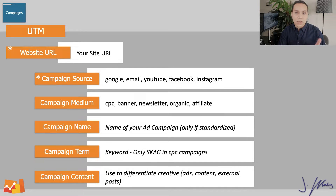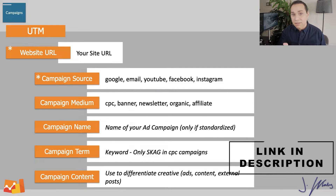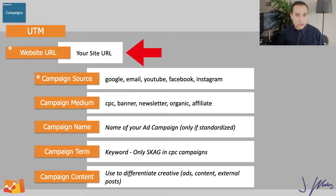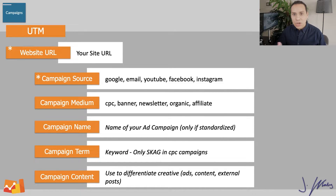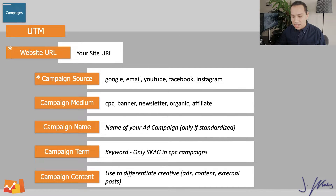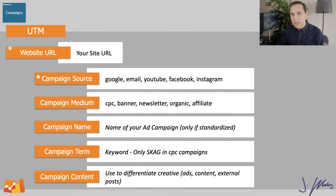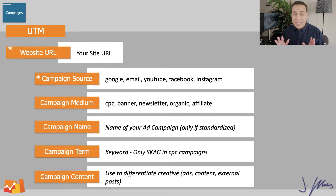Looking at this table — you can always come back using the timestamp table of contents — this is what I recommend starting with. For campaign source we have Google, email, Facebook, YouTube, Instagram, Pinterest, Twitter — whatever the platform is, have that be the campaign source. For medium, I recommend using CPC, banner, newsletter, organic, and affiliate. This covers the entire gamut of different types of content. For example on Facebook, you could be running ads, you could have organic posts, and you could have affiliates running promotions — all coming from Facebook, but you need to differentiate the type of traffic.